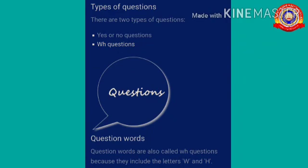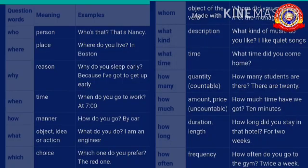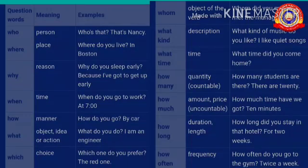Question words are also called WH questions because they include the letters W and H. Examples include: who, where, why, when, how, what, which, etc. These are some examples of WH question words.